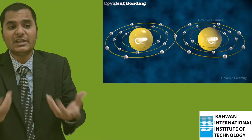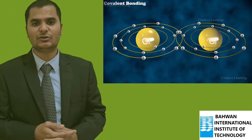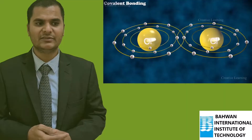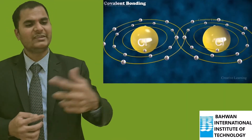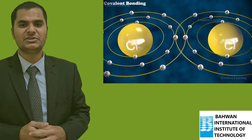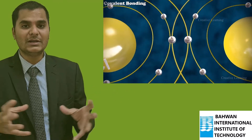So they both are contributing one electron each, and the sharing of these two electrons takes place. That is how one single bond formation takes place between the two chlorine atoms.